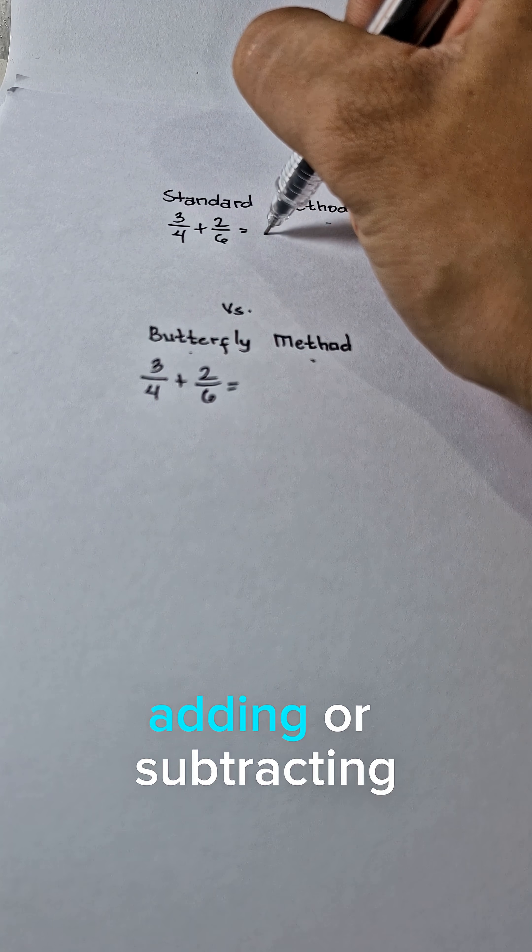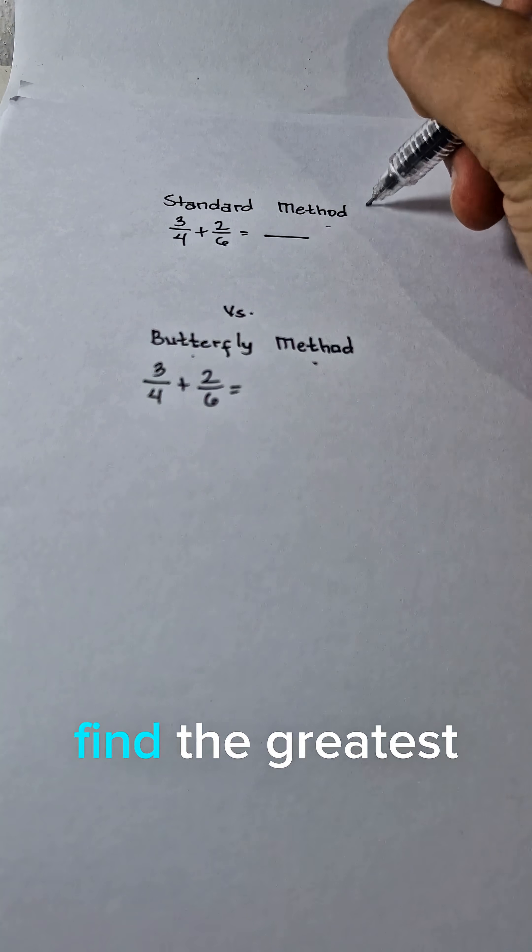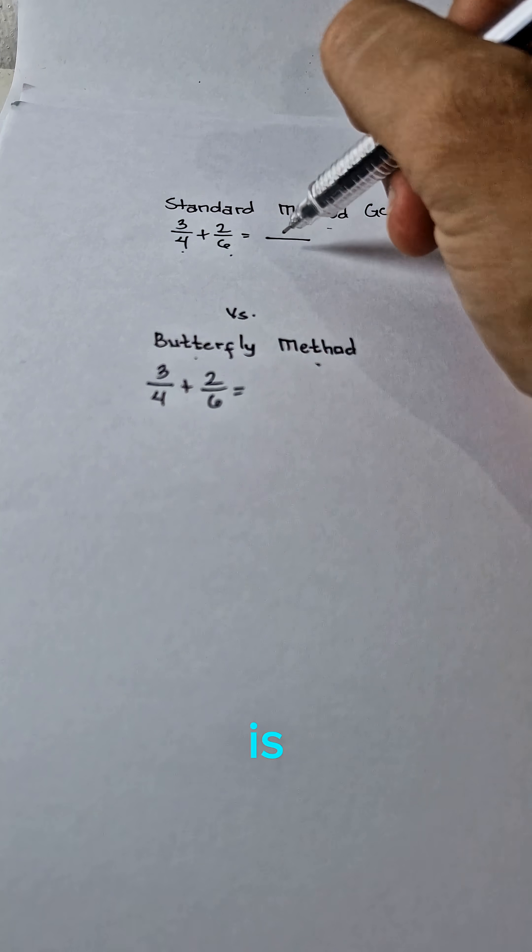In standard method, if we are adding or subtracting similar fractions, we always need to find the greatest common factor first. So the greatest common factor of 4 and 6 is 12.